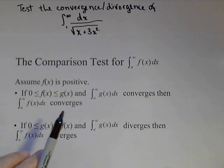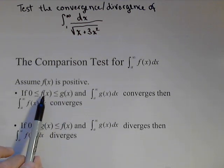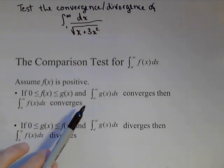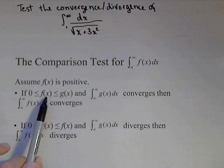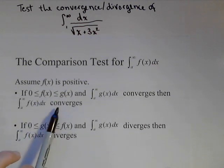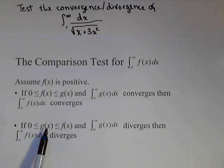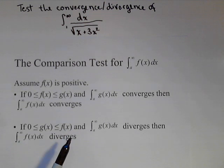Basically it says, if we have an improper integral that we know converges and we can show that the integrand is less than the integrand of the one we know converges, then it converges. Vice versa, if we have an improper integral that we know diverges and the integrand of another improper integral is greater, then we know it diverges.